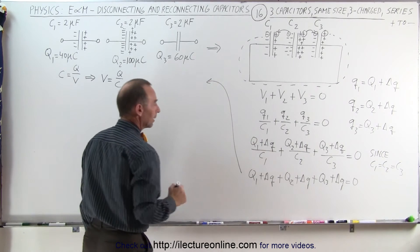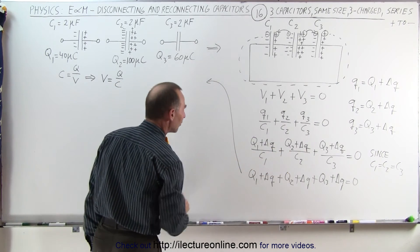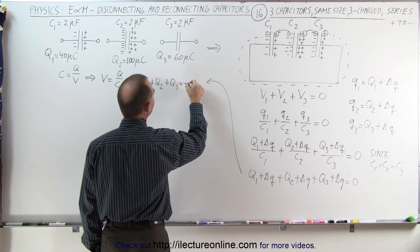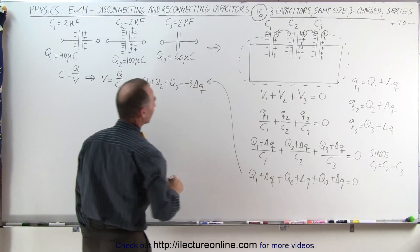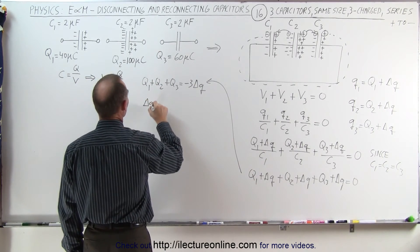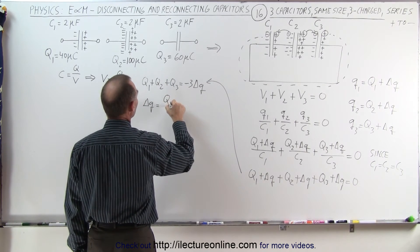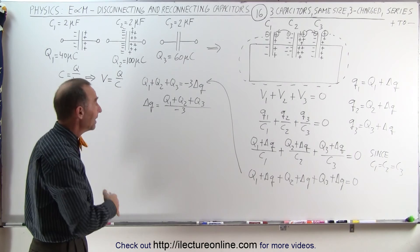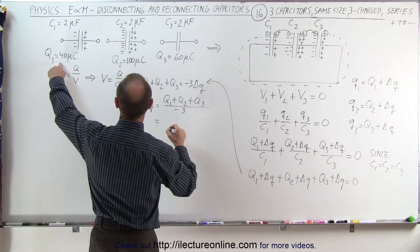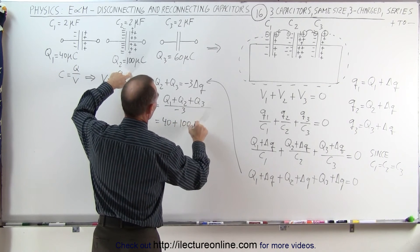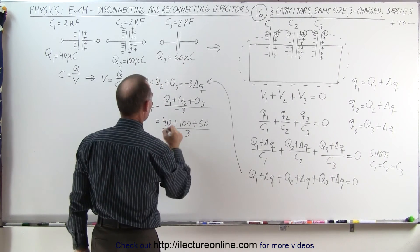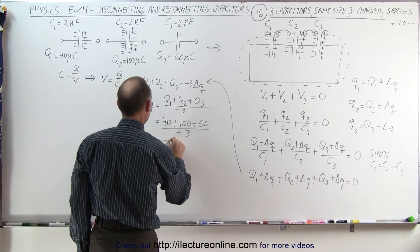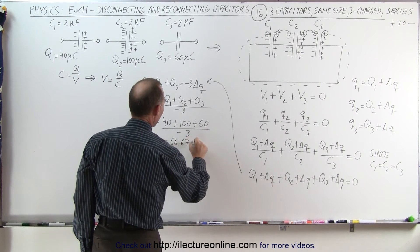I can move all the delta Q's to one side and leave all the Q's on the other side, so Q1 + Q2 + Q3 equals negative 3 delta Q. This means delta Q equals negative (Q1 + Q2 + Q3) divided by 3. So delta Q is a negative quantity. Plugging in: 40 + 100 + 60 = 200, divided by negative 3, so delta Q equals negative 66.67 micro coulombs.